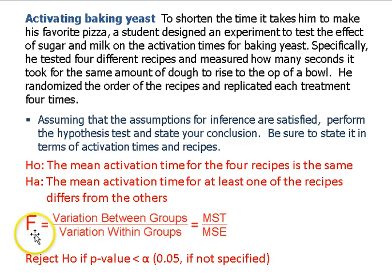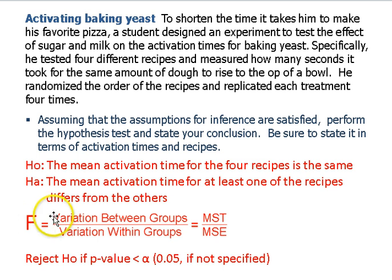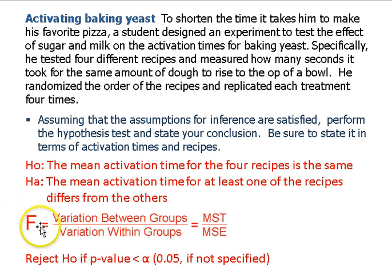Our test statistic was an F-ratio — the variation between groups over the variation within groups. If the groups are the same, then the numerator and the denominator should be about the same, so the F-ratio should be about one. If the groups are different, the variation between groups gets very large, but the variation within groups doesn't change. So the more different the groups are, the greater the numerator is, and the greater the overall F-ratio is.